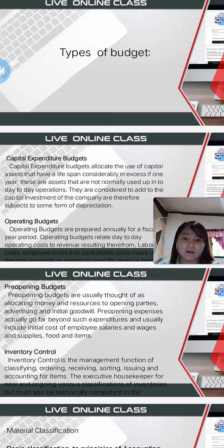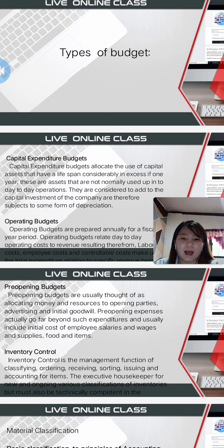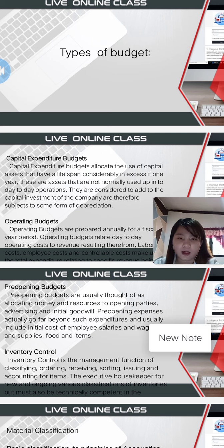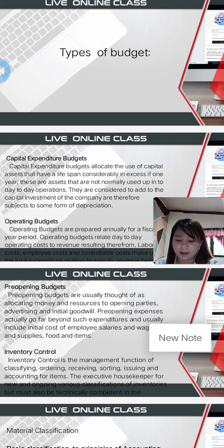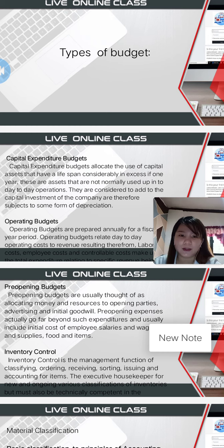Inventory control is the management function of classifying, ordering, receiving, sorting, issuing, and accounting for items. Examples include barcode scanner integration, re-order reports and adjustments, product details, histories, and locations.